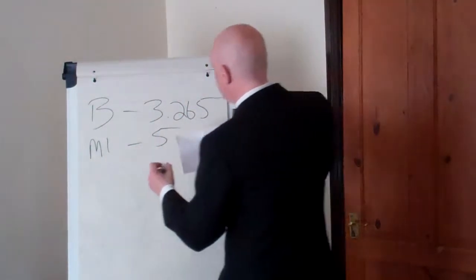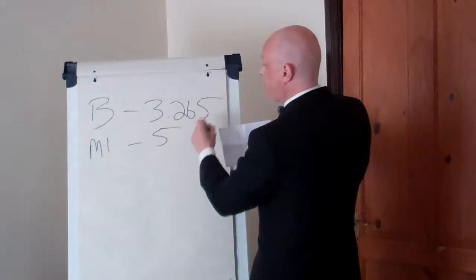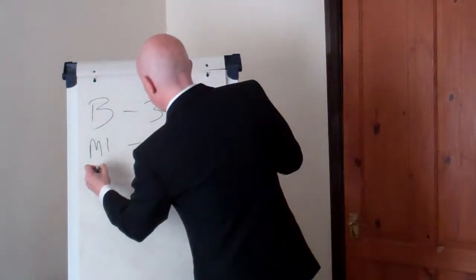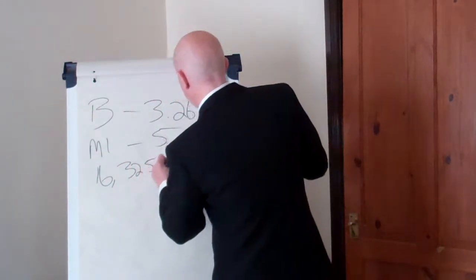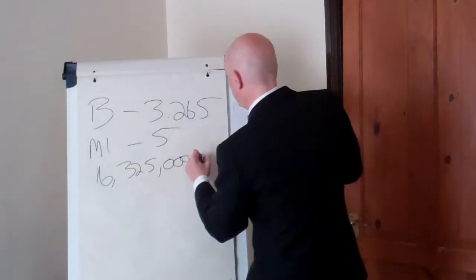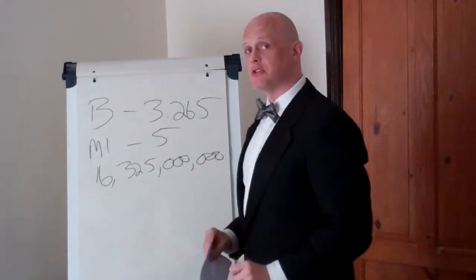So, this altogether gives us, this many people by this many mils is 16,325,000,000,000 of jizz.